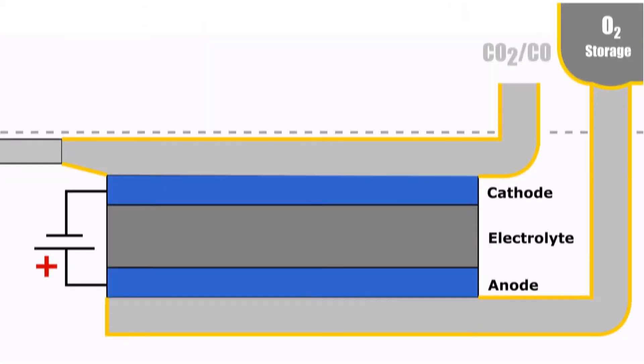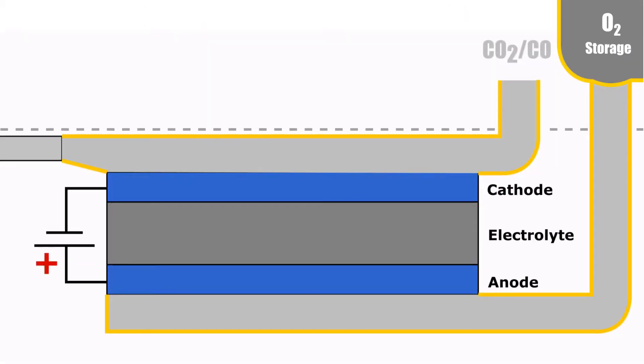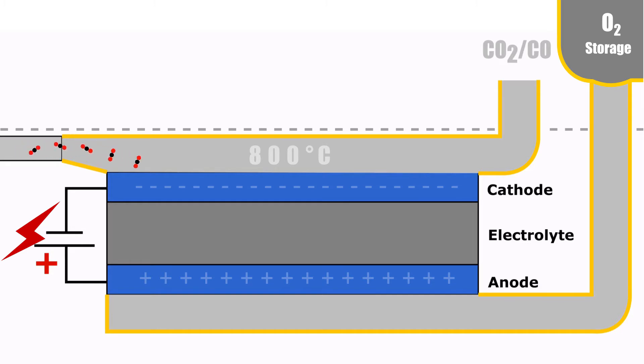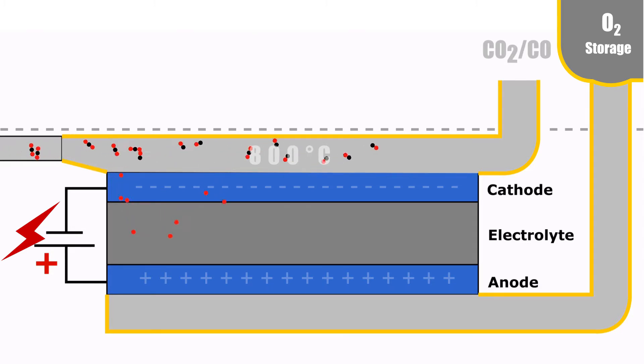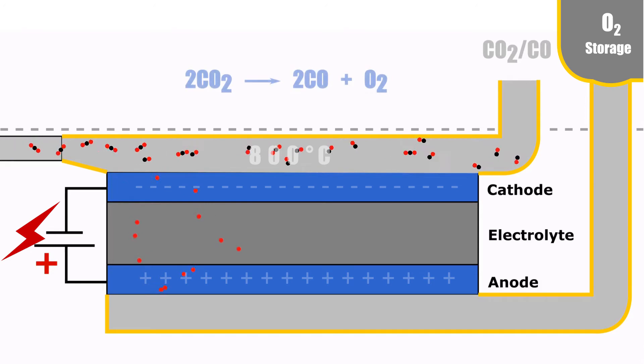The carbon dioxide is first heated to 800 degrees Celsius. When a voltage is applied to the system and carbon dioxide is flown over the cathode, the following net reaction takes place.